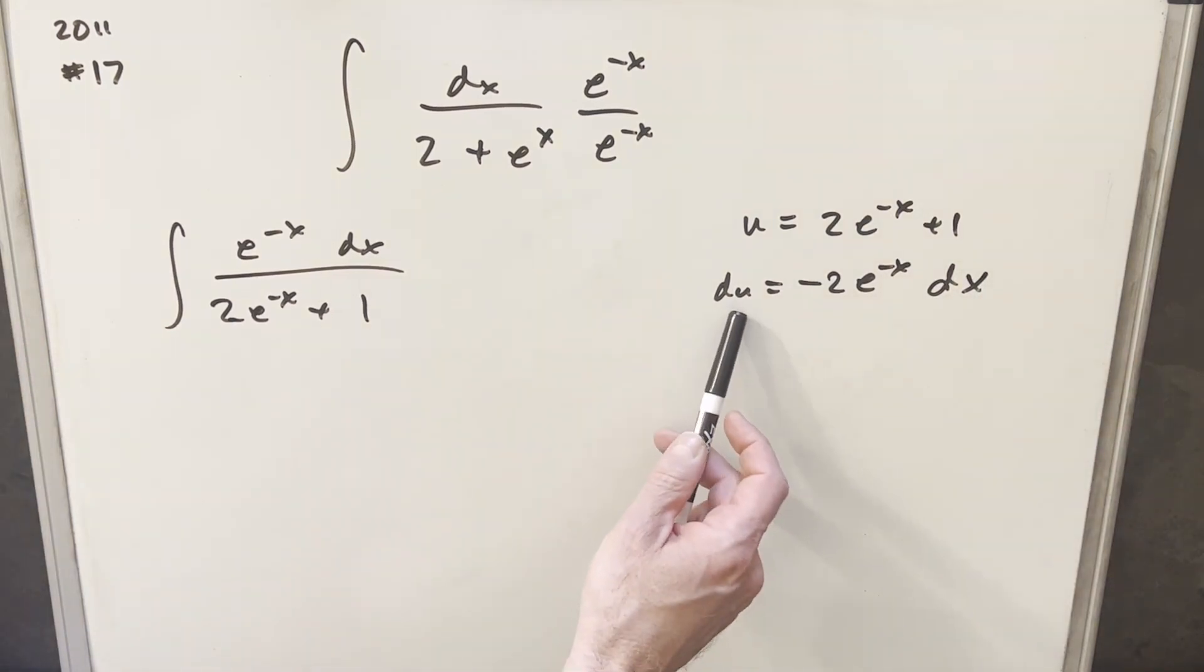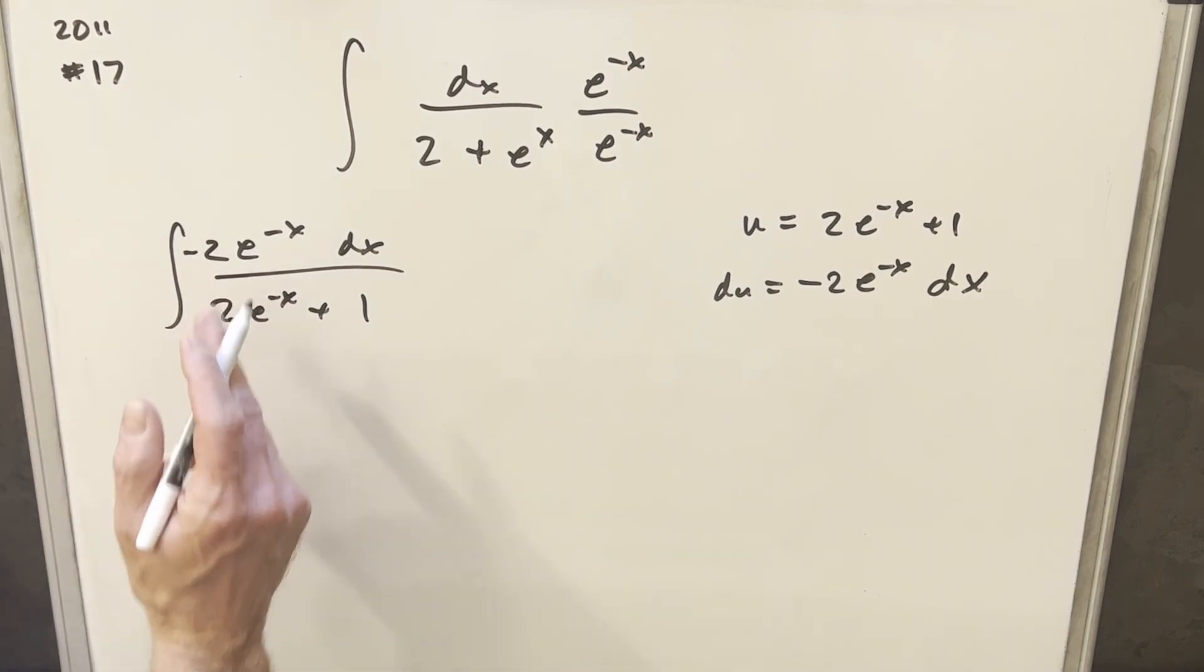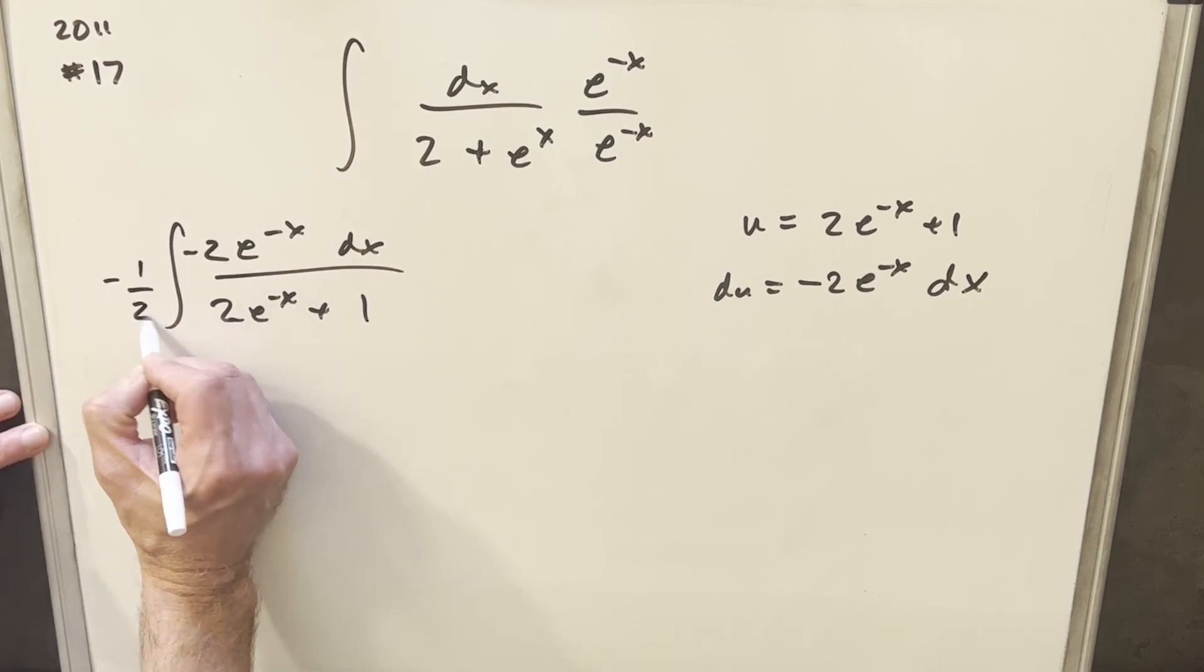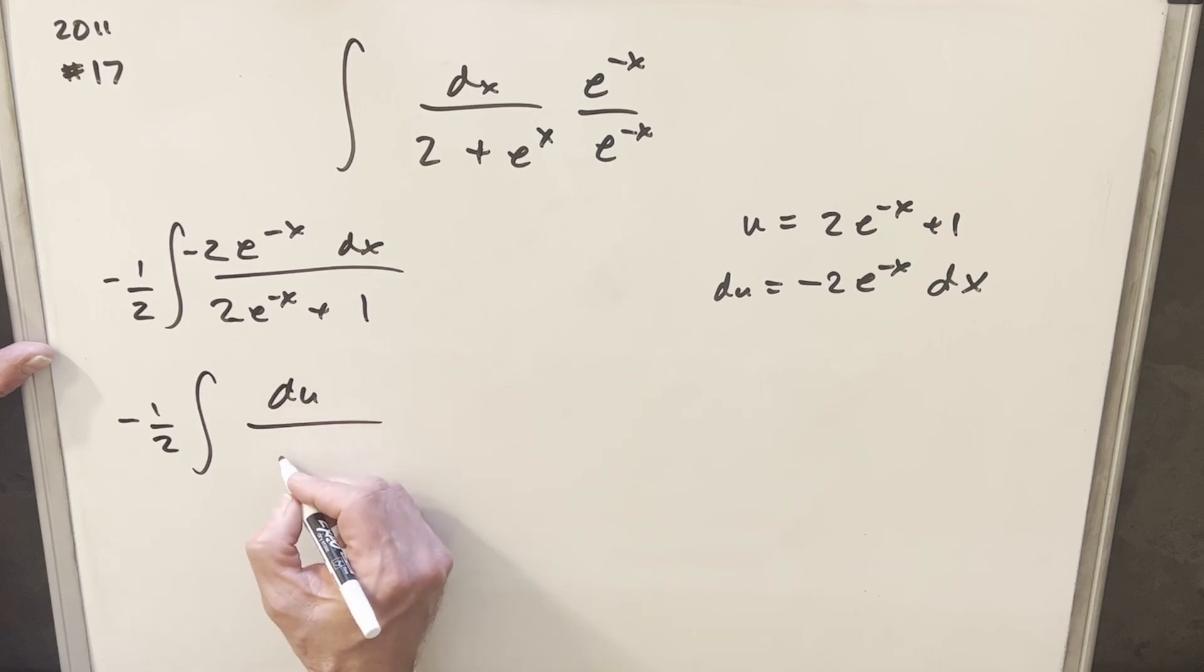Just notice that our numerator is really close to our du value. I'm just going to make it convenient and multiply a minus 1/2 in front so that we're just multiplying by 1. Then we'll make the substitution. We'll have our minus 1/2 out front, du in the numerator. This bottom part, the denominator is just going to be u.